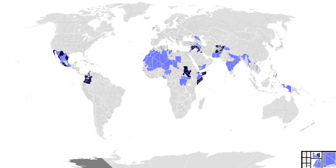Biological warfare, also known as germ warfare, is the use of any organism — bacteria, virus, or other disease-causing organism or toxin found in nature — as a weapon of war. It is meant to incapacitate or kill enemy combatants. It may also be defined as the employment of biological agents to produce casualties in man or animals and damage to plants or material, or defense against such employment.